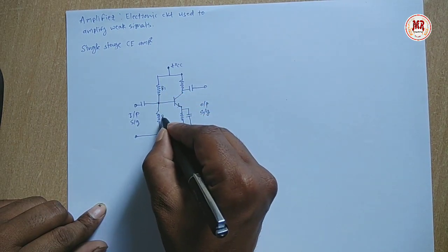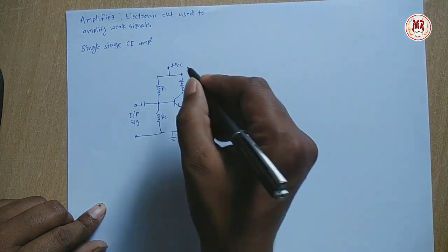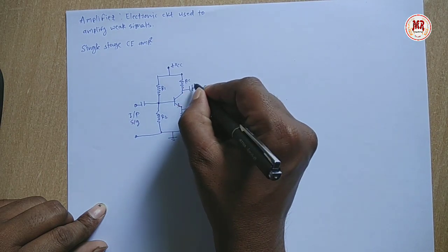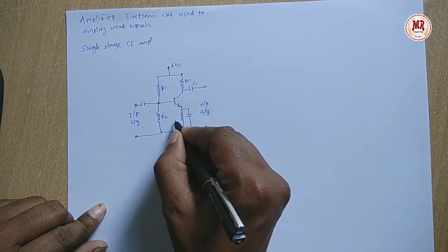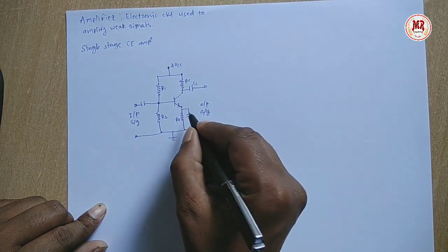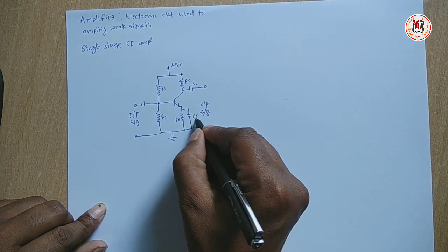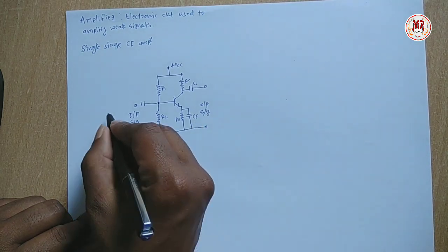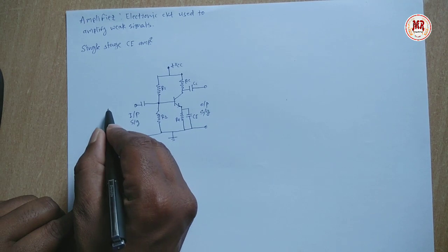Resistors R1 and R2 are used to provide voltage divider bias for the transistor. That is, it operates transistor in active region. Then RC is load resistance, RE is emitter resistance.